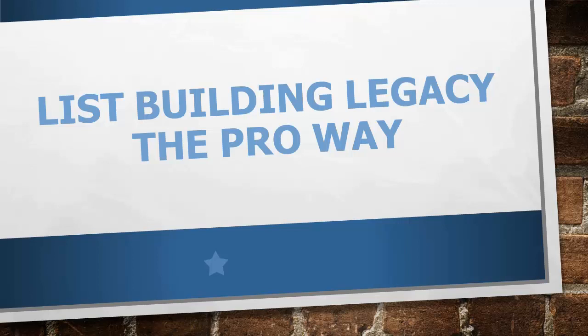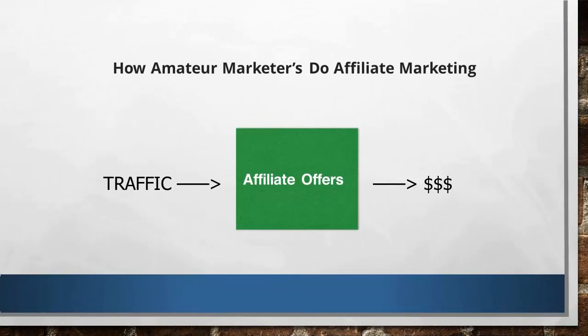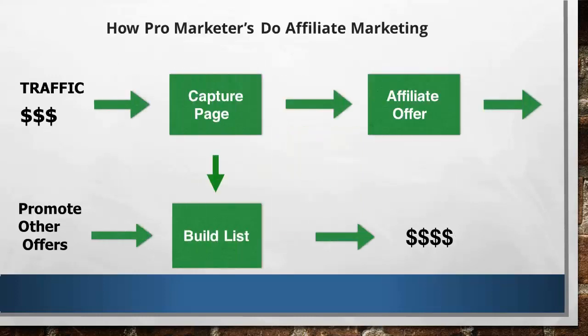On your screen you can see an image of how newbie marketers do affiliate marketing. They have their traffic source, which, for example, could be Facebook traffic or solo ads, all going directly to the offer. Of course, these affiliates make some money by doing this. But if this is the way newbie marketers do affiliate marketing, then how do pro marketers do it? Or better yet, how should you correctly be doing affiliate marketing?